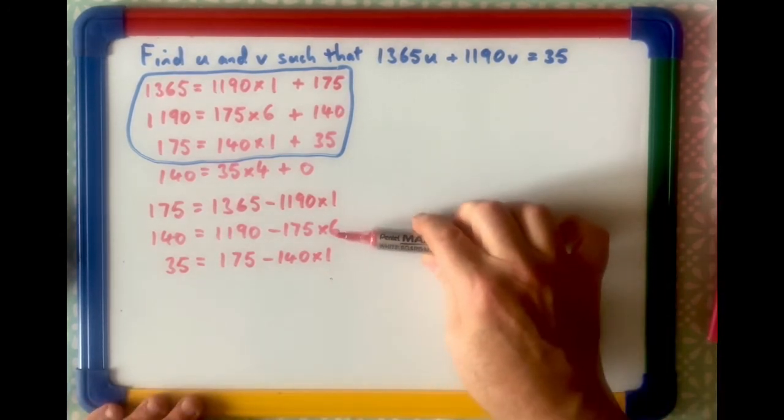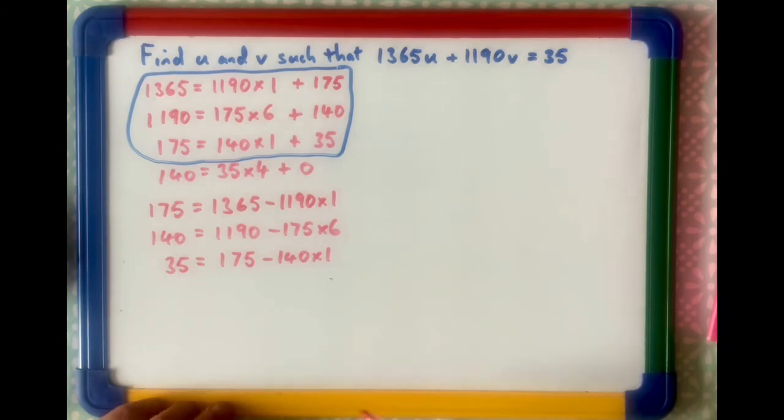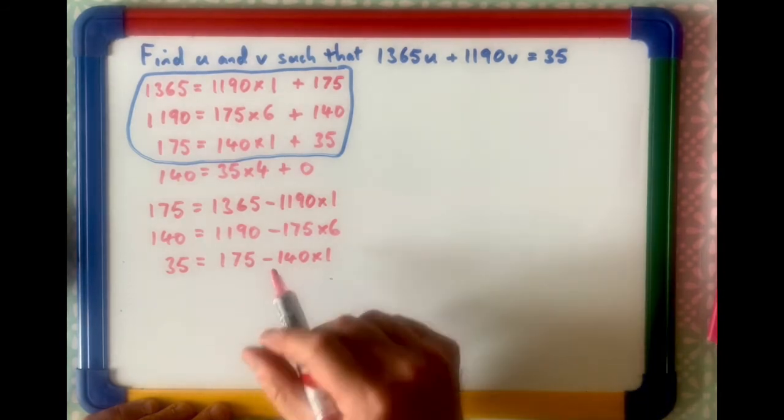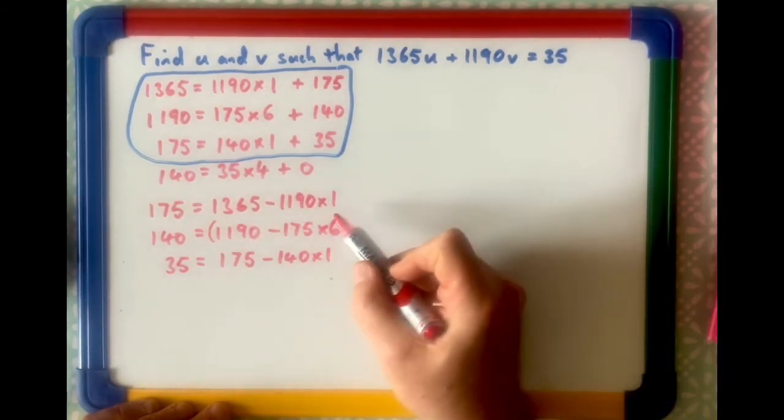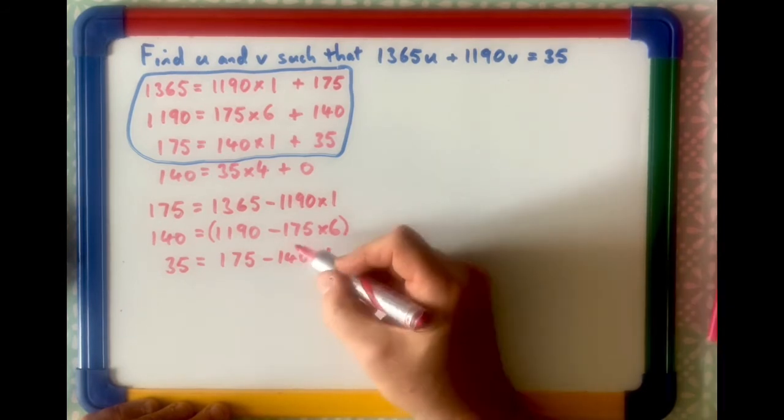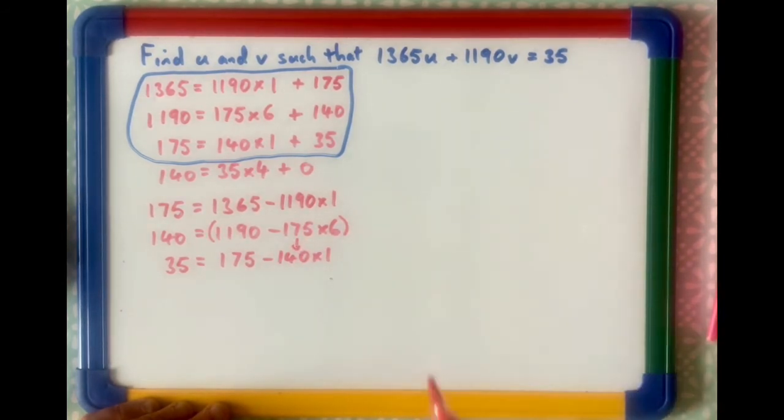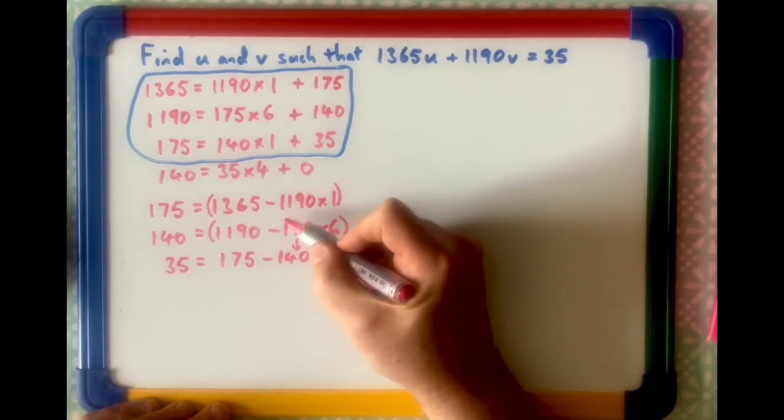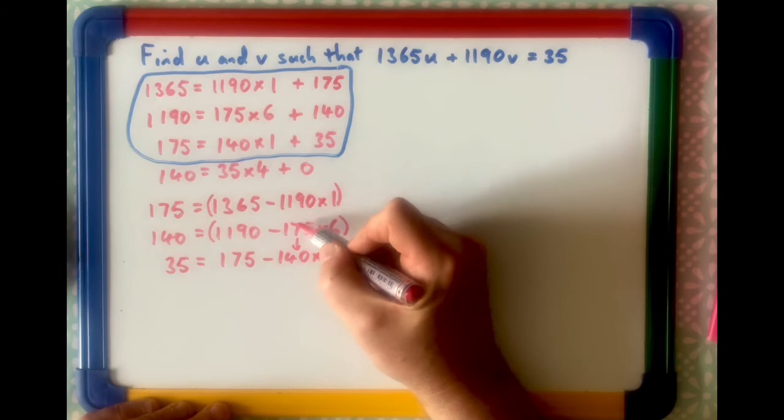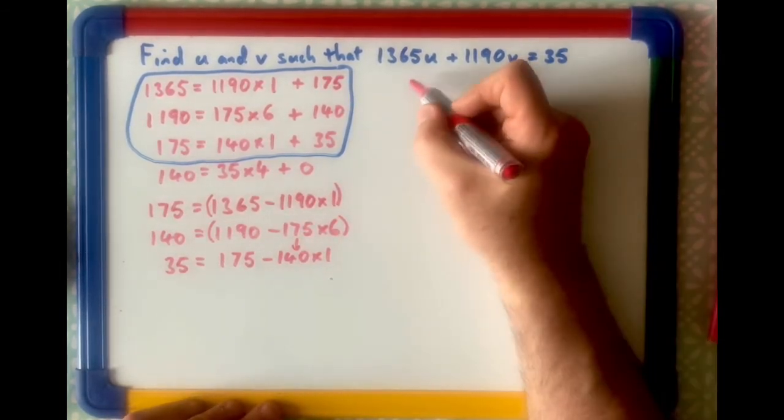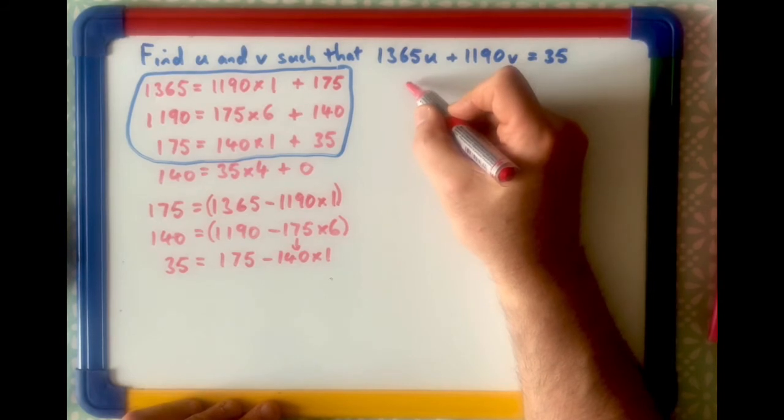Remember, what we're going to do next is the sort of reverse substitution thing, because what I want to do, first of all, is I want to get rid of 140 in this one, but look, 140 is equal to that, so I can put that in there instead of 140. And then, similarly, I know 175, I can change it for this thing here. So, let's go through that, let's start off with our first line there.